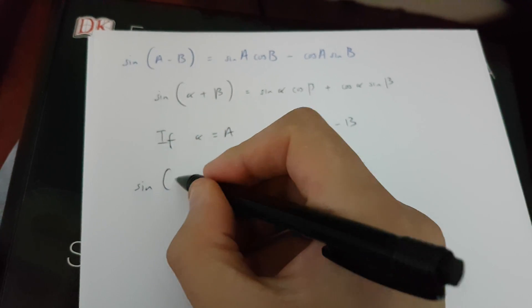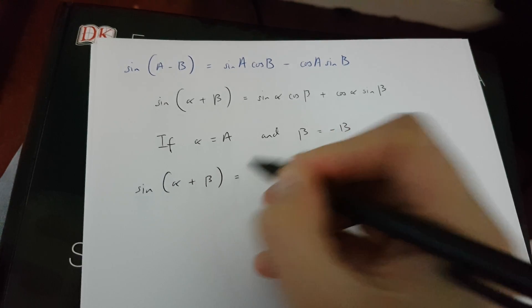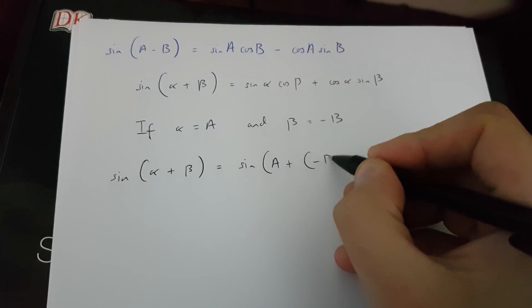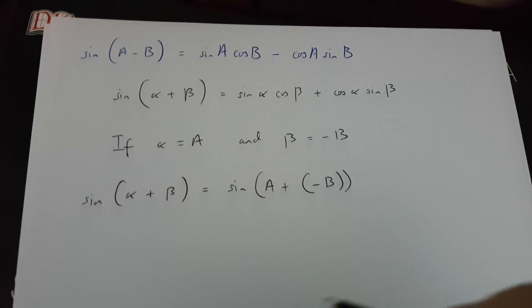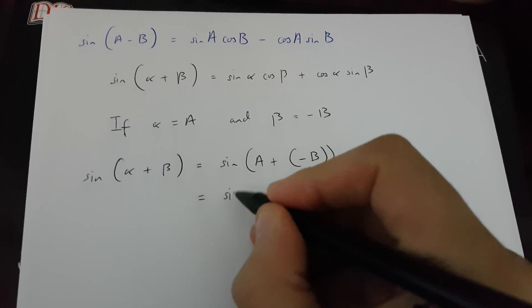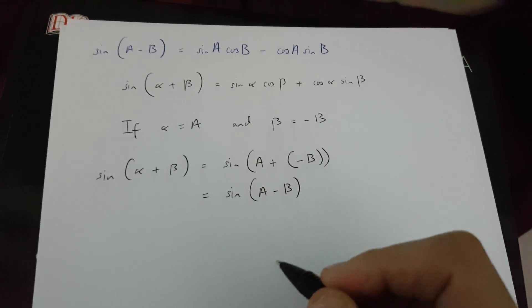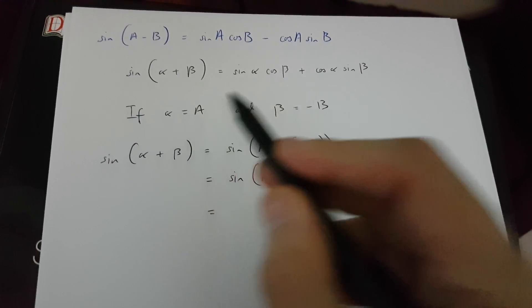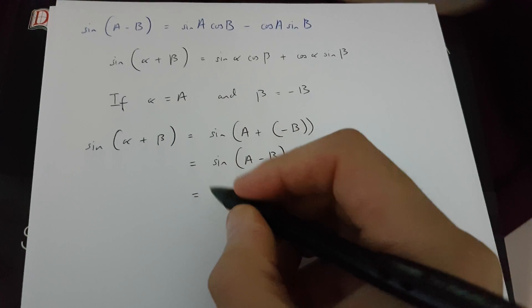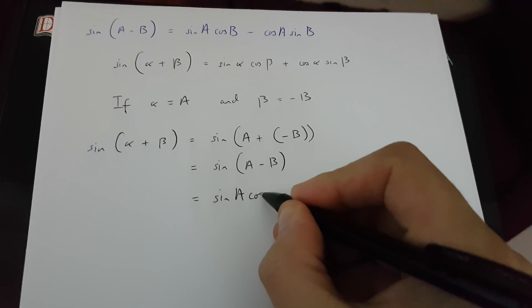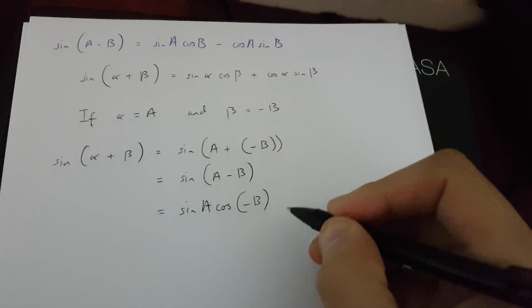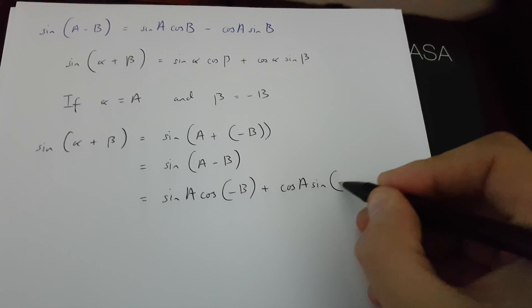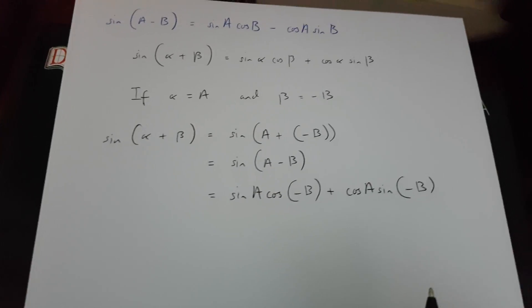sin(alpha + beta) is going to be equal to sin(A + (-B)), okay? And sin(A + (-B)) is, in fact, sin(A - B). And this is going to equal, when alpha equals A and beta equals minus B, sin A cos(-B) plus cos A sin(-B), okay? Now...